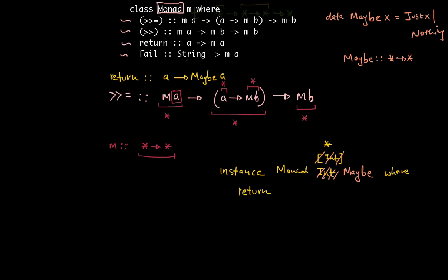So how would I create a value that follows this type signature? Return - this A could be anything, it literally could mean anything. So I'm going to say 'return x' - some value x that happens to have whatever type is in this type variable A. And that is going to equal to: how do I create some value of type Maybe A? I can just create that as Just of x. So: return x = Just x.